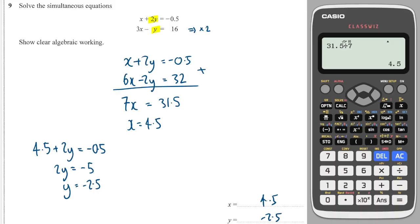And I'll just show you one more time how we can use our calculators to check. We go down into equation, simultaneous, two unknowns. And we do 1, 2, minus 0.5, 3, minus 1 and 16. And we get 4.5 and minus 2.5.